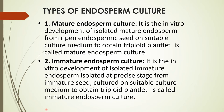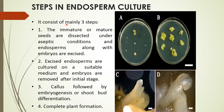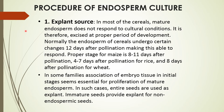It consists of three steps: the immature or mature seed is dissected under aseptic conditions, and the endosperm along with the embryo, or excised embryo or endosperm, is cultured on suitable medium. The embryo is removed after the initial stage. Callus formation is followed by embryogenesis or shoot bud differentiation, and complete plant formation takes place.